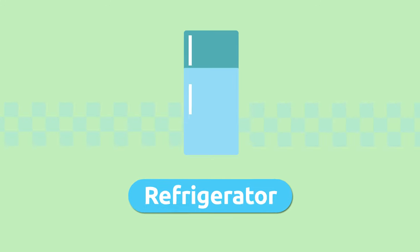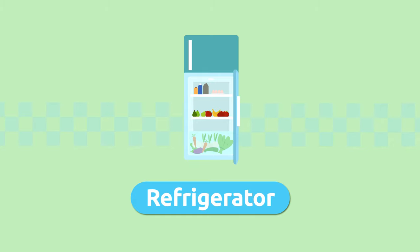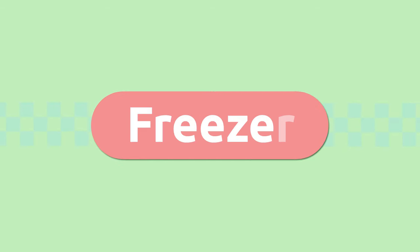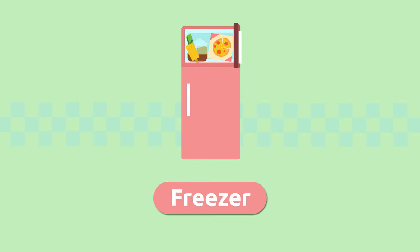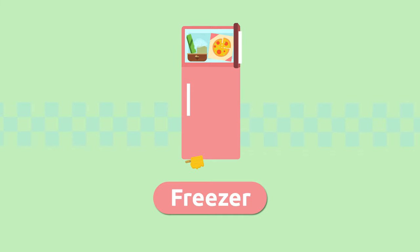Refrigerator — we put fresh foods in the refrigerator to keep them cool. Refrigerator. Freezer — the temperature in the freezer is very low. This freezes foods and helps to preserve them for a very long time. A freezer is usually part of the refrigerator. Freezer.